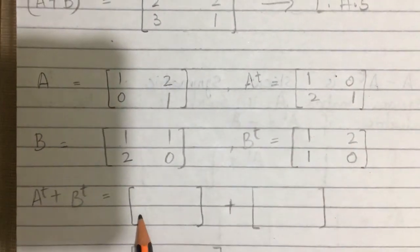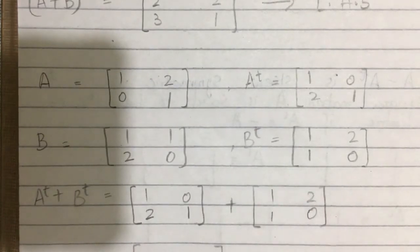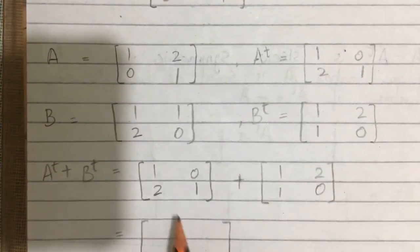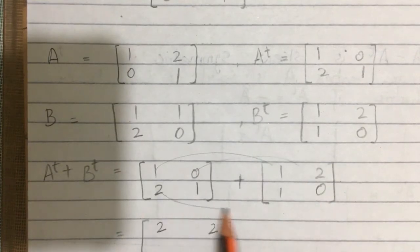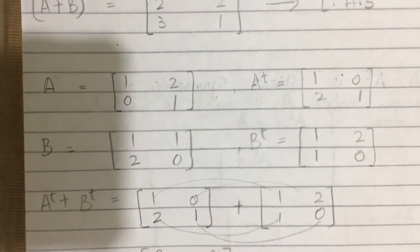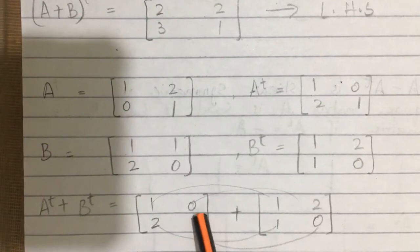A transpose is [1, 2; 0, 1] and B transpose is [1, 1; 2, 0]. Now add A^T + B^T: 1+1=2, 0+2=2, 2+1=3, and 1+0=1. So A^T + B^T = [2, 2; 3, 1].